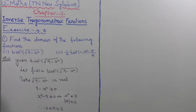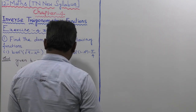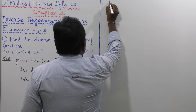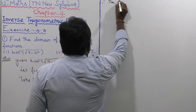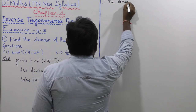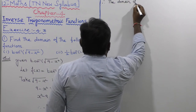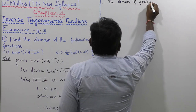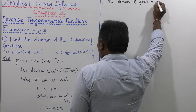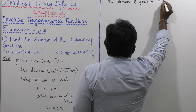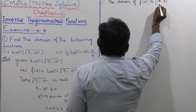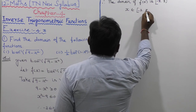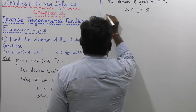So the domain of f of x is from minus 3 to plus 3. Therefore, the domain of f of x is the closed interval minus 3 comma 3, and x belongs to the closed interval [-3, 3]. That completes the first subdivision.